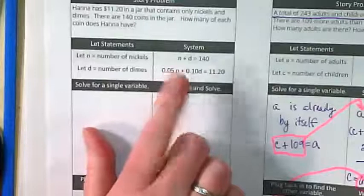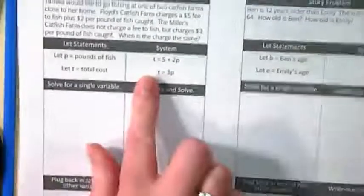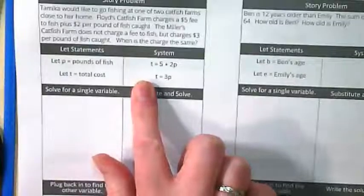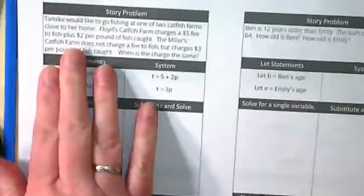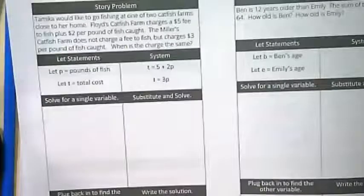All right. There are two more problems with the system already in place. This one is dealing with coins like we did yesterday. This one is talking about a catfish farm. I'm going to ask you to solve one of those two right now. You get to choose. And that's going to be where we end today. Thank you.